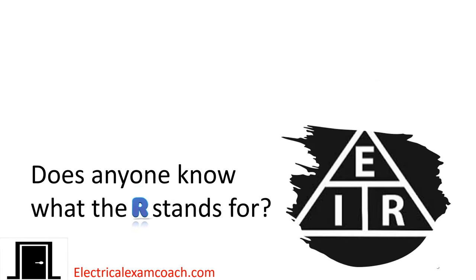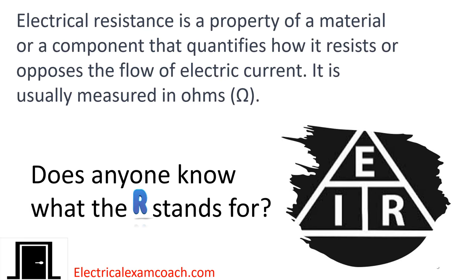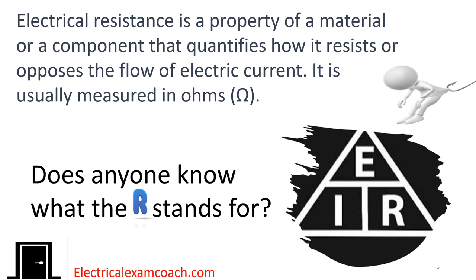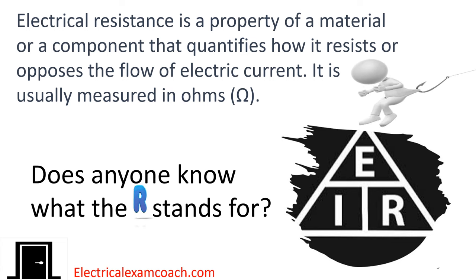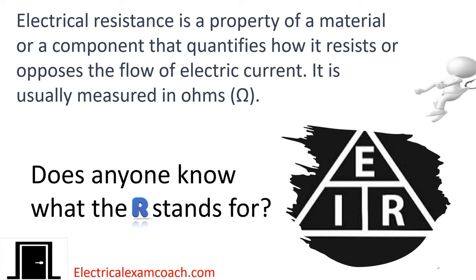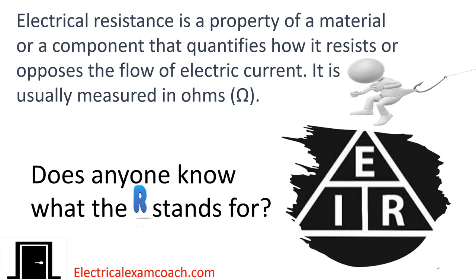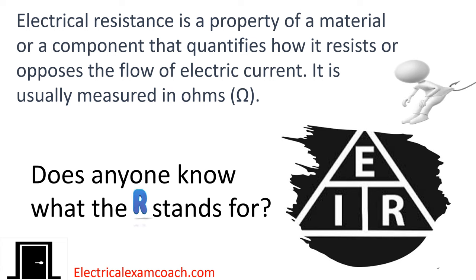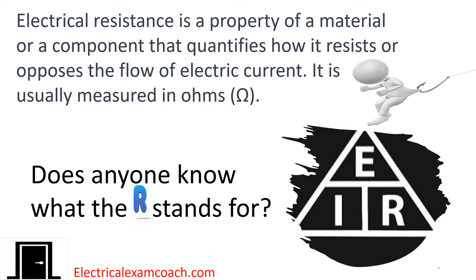The R stands for electrical resistance. It is a property of a material or component that quantifies how it resists or opposes the flow of electric current, and it's usually measured in ohms. It's letting us know how much it's resisting that electrical flow, which also affects the amperage that flows through the circuit. All three — E for voltage, I for amperage, and R for resistance — are directly related together.